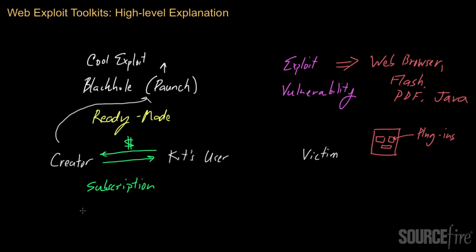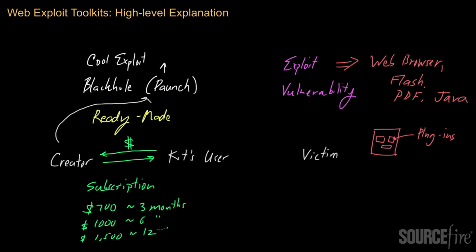For example, Black Hole at one point cost about $700 to use for three months, $1,000 for six months, and about $1,500 for a full year. These are the prices if the kit's user actually hosts Black Hole on their own server.